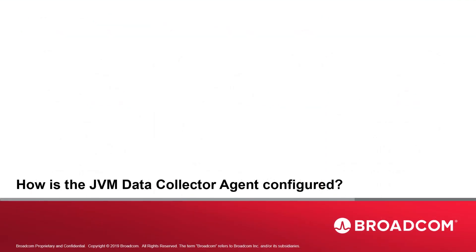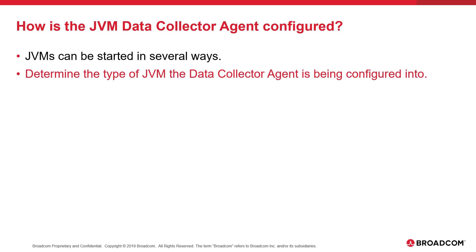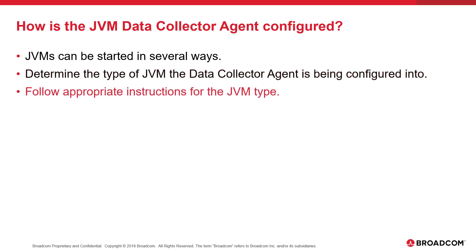How is the JVM Data Collector Agent configured? JVMs can be started in several different ways — for example, running Java from the command line is very different than running Java in a CICS region. Samples and directions for many types of JVMs are provided in SysView documentation. In all cases, to configure an agent into a JVM, the configuration will need to be updated to indicate that the agent is to be started and where the agent binaries reside. The JVM type should be determined so the correct set of instructions can be referenced.